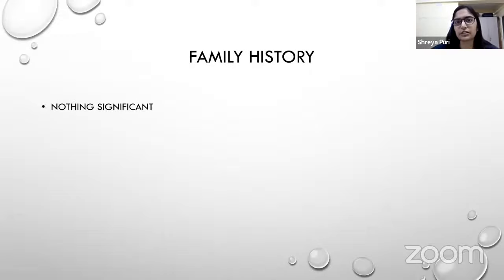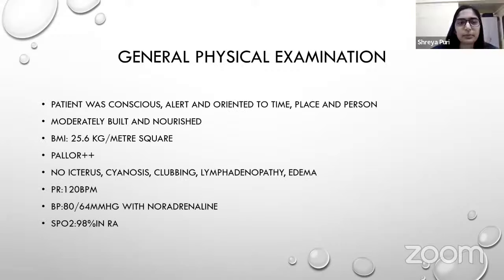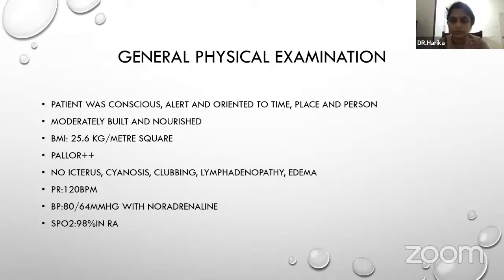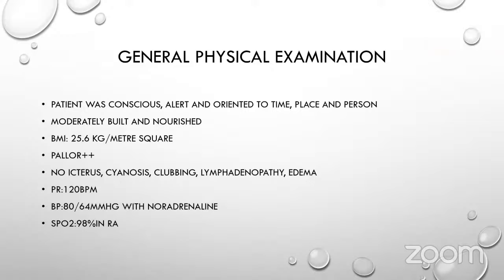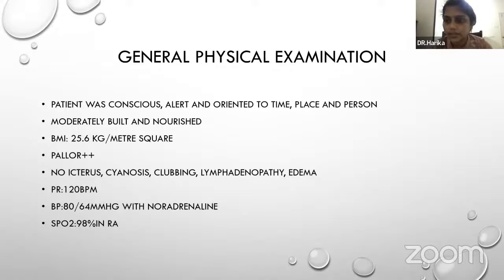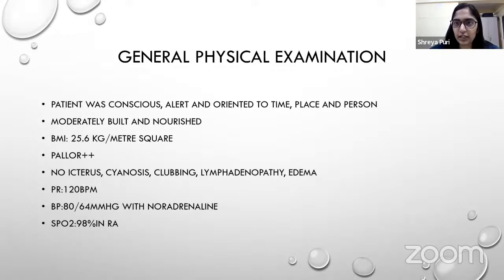No significant family history. General physical examination: the patient was conscious, alert, and oriented to time, place, and person — indicating she had not gone into frank hemodynamic shock. She was moderately built and nourished, BMI 25.6 kg/m². Pallor was present — indicating internal bleeding. No icterus, cyanosis, clubbing, lymphadenopathy, or edema. Pulse was 120 beats per minute. Blood pressure was 80/64 mmHg on noradrenaline, confirming hemodynamic instability.